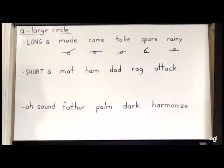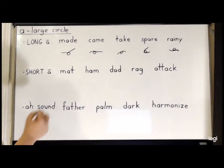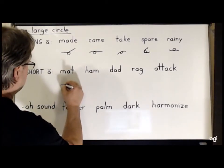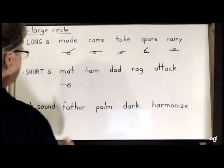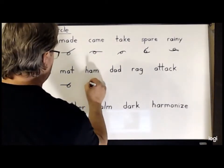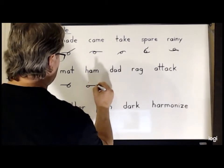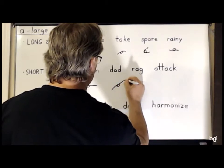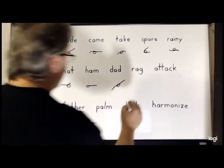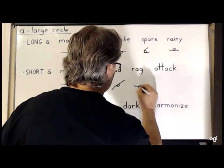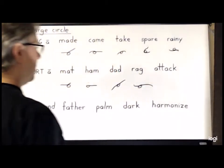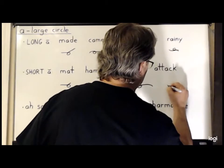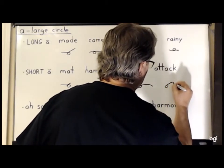Then for the short A sound, as in 'Matt', 'Ham', we will write these words. So for 'Matt', it's just M-A-T; for 'Ham', H-A-M; 'Dad', just D-A-D; 'Rag' is R-A-G. And finally, 'attack', which is A-T-A-K.